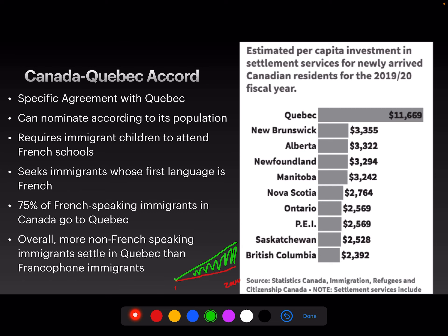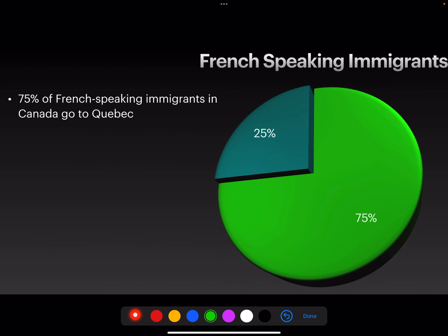That means over time the non-French-speaking population is growing at a higher rate, which means more and more of Quebec's population can't speak French. Quebec is worried about this. One thing the Canada-Quebec Accord does is look at per capita investment in settlement services for new residents — Quebec invests way more per capita than every other province. Quebec is trying to say: if you want to come here, we want you speaking French, and we will really take care of you.